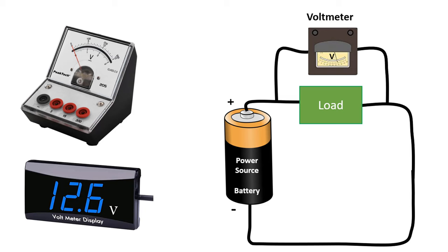A voltmeter is an instrument that measures electric potential difference, or voltage, between two points in an electrical circuit. It is connected in parallel with the part of the circuit being measured, so the voltage across that part of the circuit also appears across the voltmeter. Voltmeters are designed to measure a wide range of voltage values, from very small voltages to large voltages.